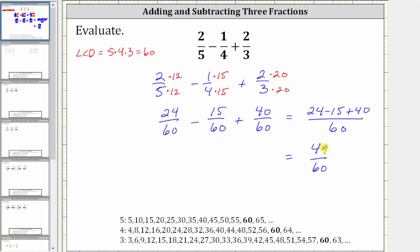The only common factor between 49 and 60 is one, and therefore we know 49 60ths is simplified. I hope you found this helpful.